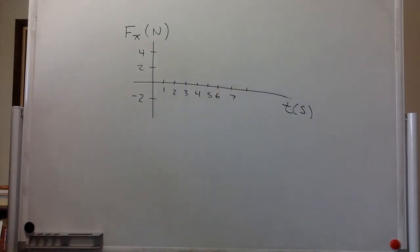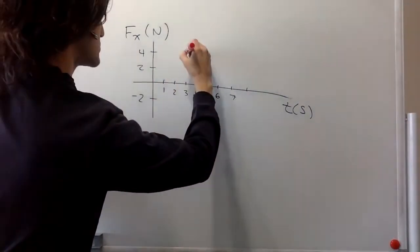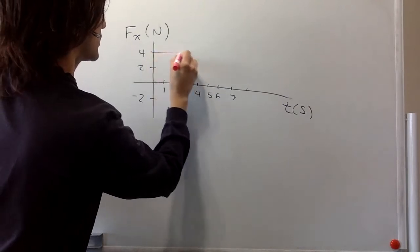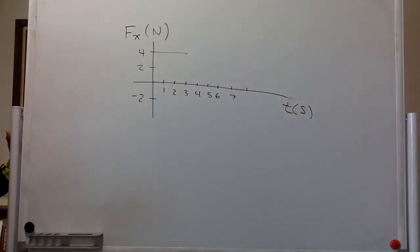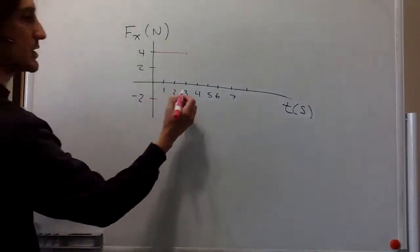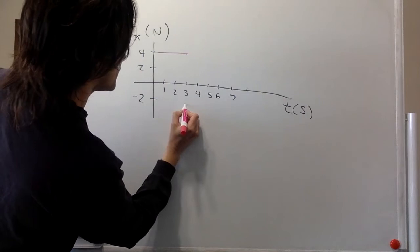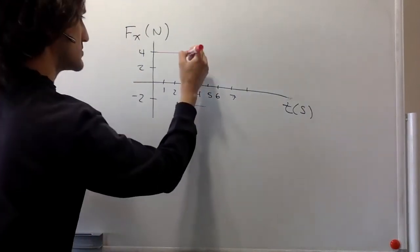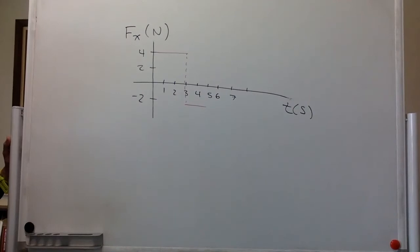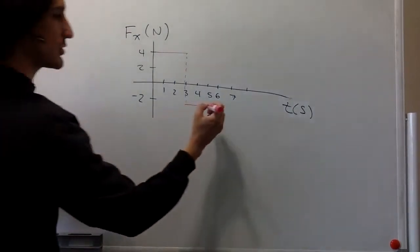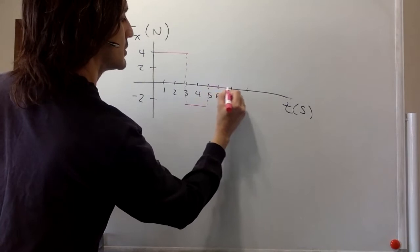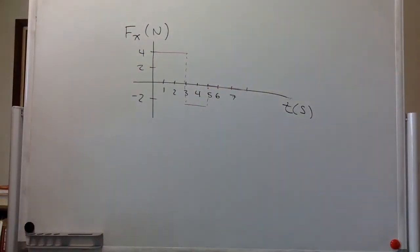So there is a force of 4 newtons that is applied for 3 seconds. It looks like this. And then it goes to negative 2 from 3 to 5 seconds. This is an immediate change. And then it goes to 0 over here and it continues being 0 for the rest of the time.